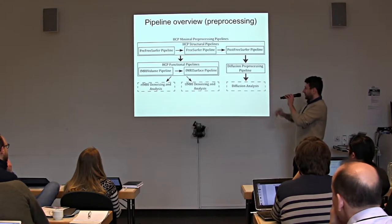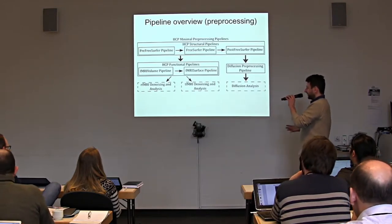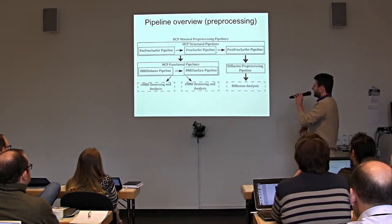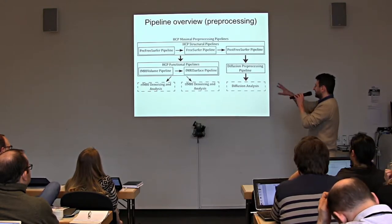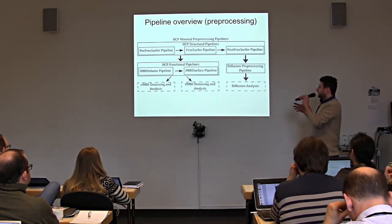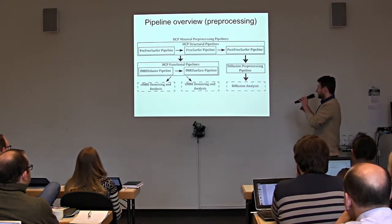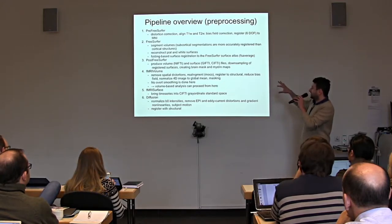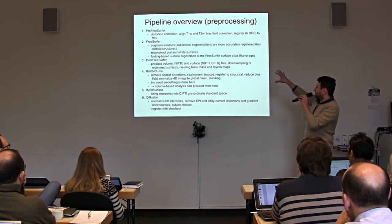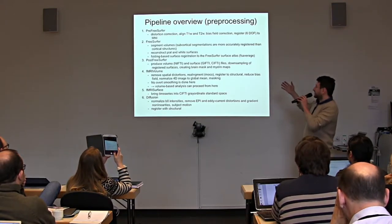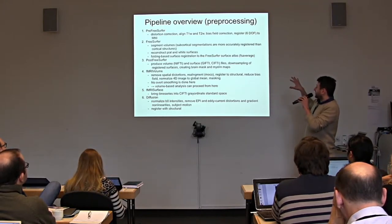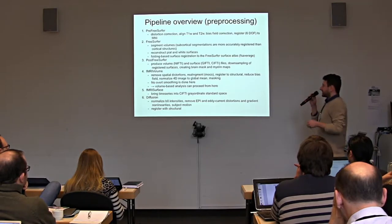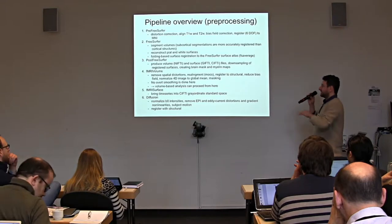The pipeline in one image: in the first step we do distortion correction, align T1 and T2 images, do bias field correction, and linearly register with six degrees of freedom — three translations and three rotations — to MNI, just to have all subjects crudely aligned. FreeSurfer then segments these volumes; we only use the subcortical segmentations. The cortical segmentations are based on folding patterns.